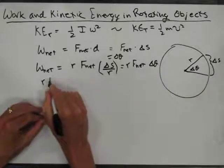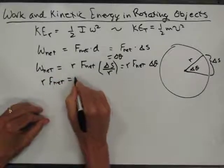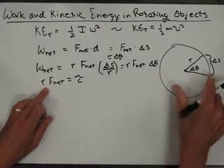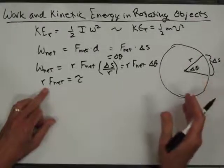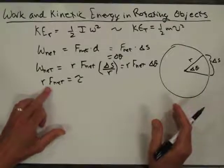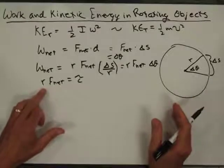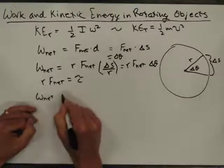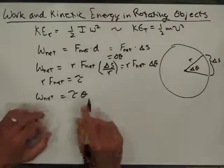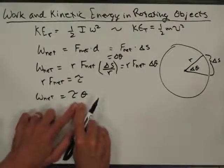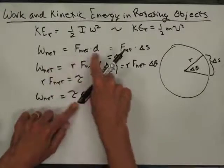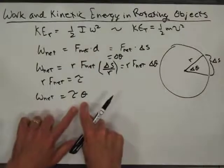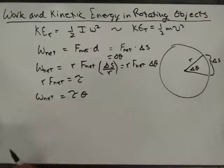r times F_net is just equal to the torque. There's a sine theta in there, but the angle between the force and the radius is 90 degrees, so sine theta equals 1. This gives us that net work equals torque times angle. You could have guessed that: if work is force times distance, the rotational equivalent is torque times angle — you could have seen that from the beginning.